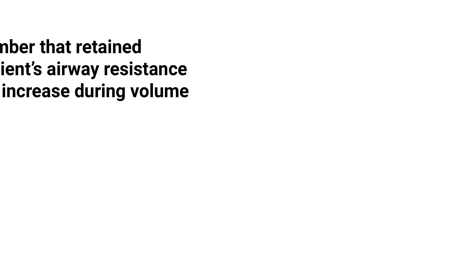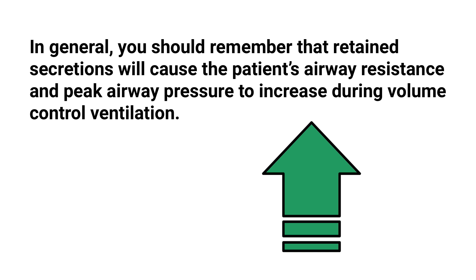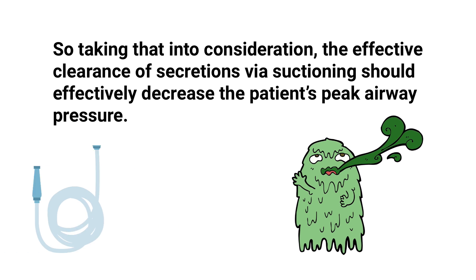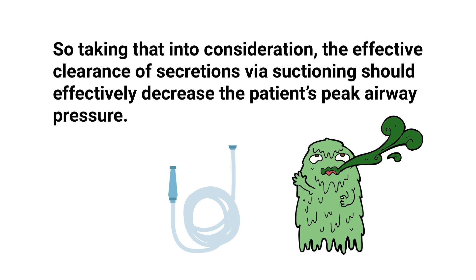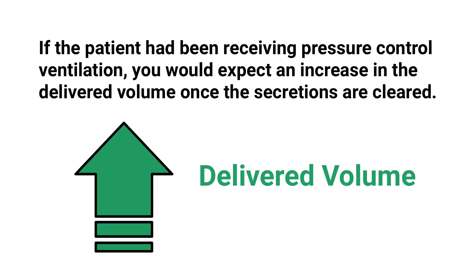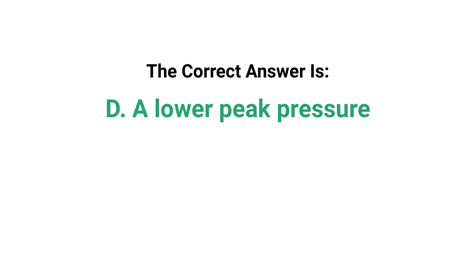In general, you should remember that retained secretions will cause the patient's airway resistance and peak airway pressure to increase during volume control ventilation. So taking that into consideration, the effective clearance of secretions via suctioning should effectively decrease the patient's peak airway pressure. On the other hand, if the patient had been receiving pressure control ventilation, you would expect an increase in delivered volume once the secretions are cleared. None of the other answer choices really make sense in this situation, so the correct answer has to be D, a lower peak pressure.